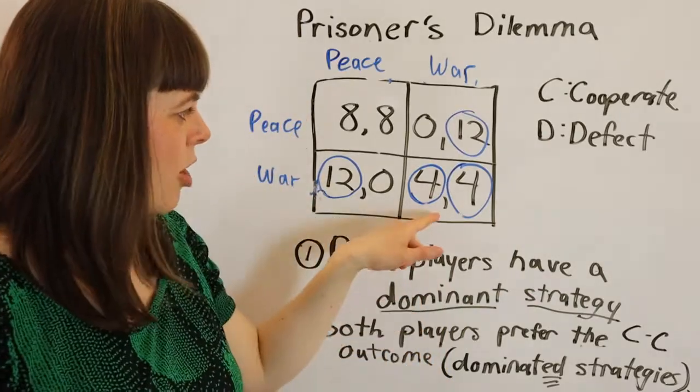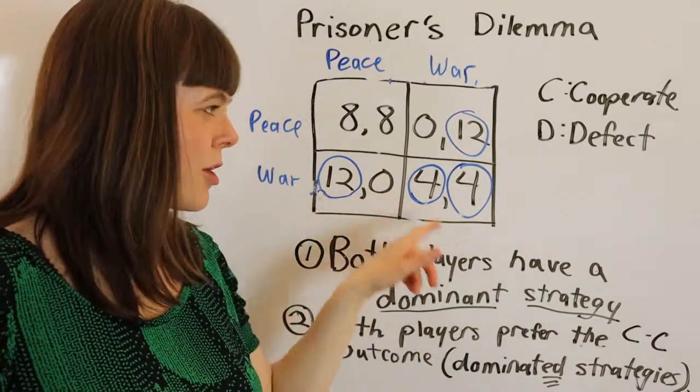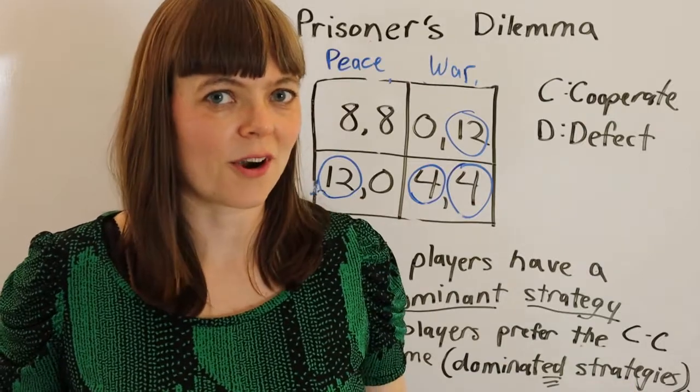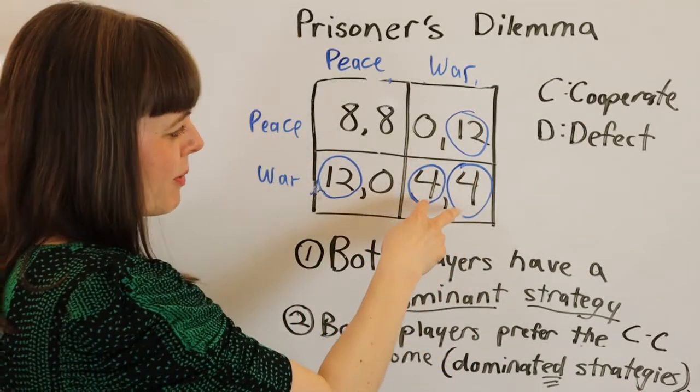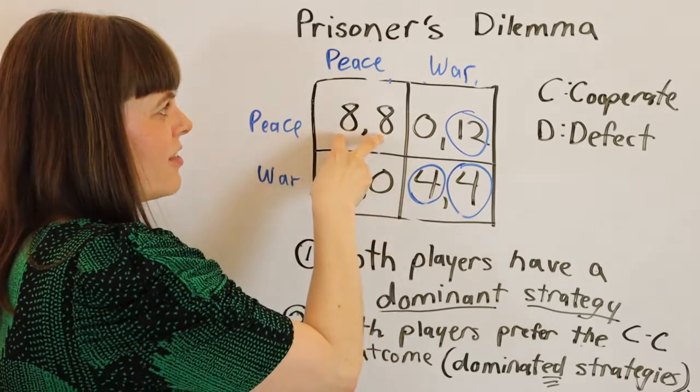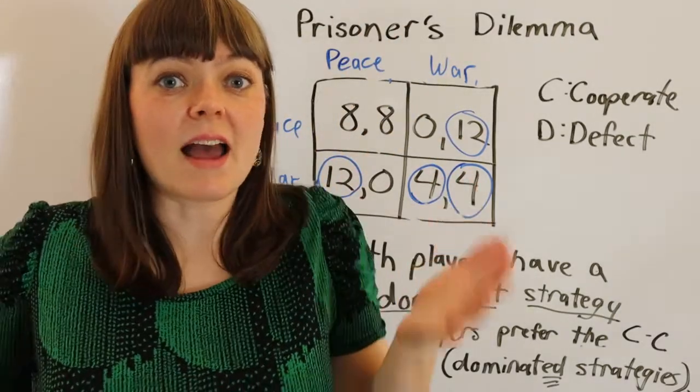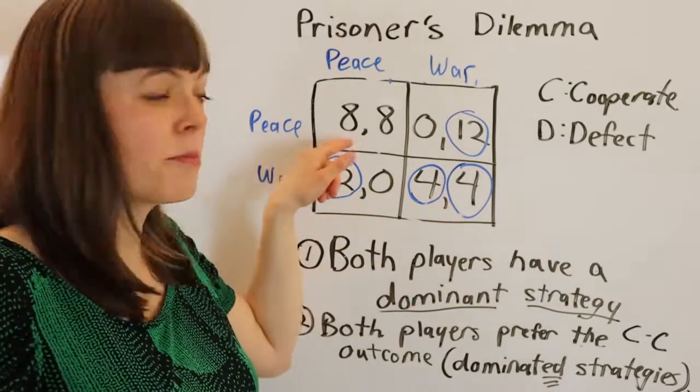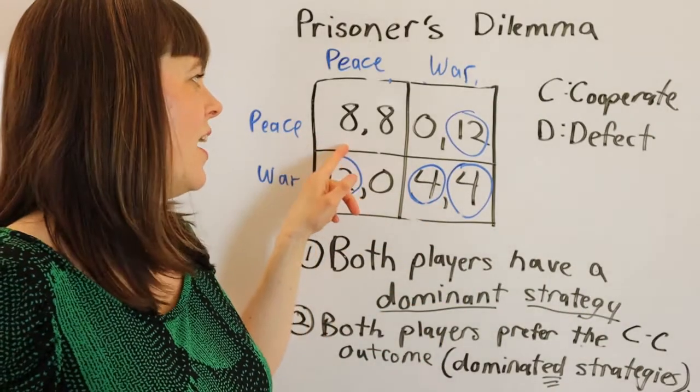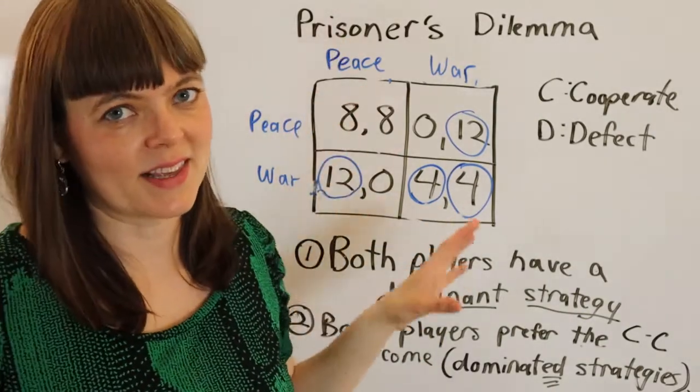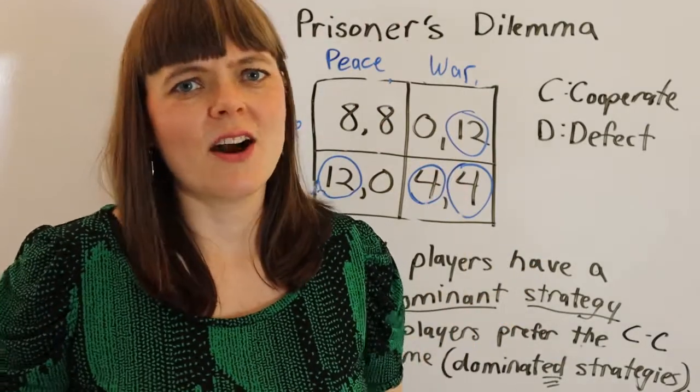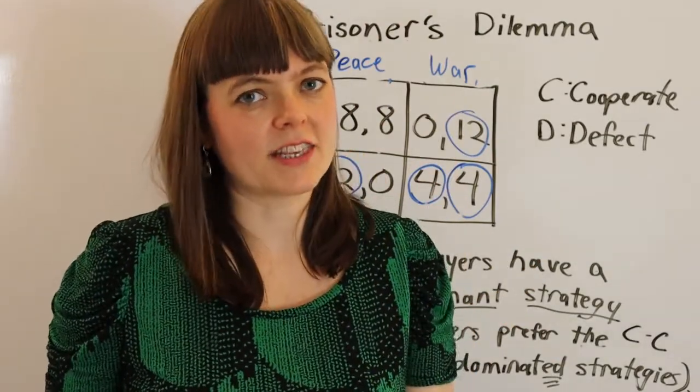So going to war is a dominant strategy. The Nash equilibrium is for everybody to go to war. But everybody prefers the situation where they all played their dominated strategy and everybody stays peaceful. You lose fewer lives, et cetera. Now, of course, you could change the payoffs here.